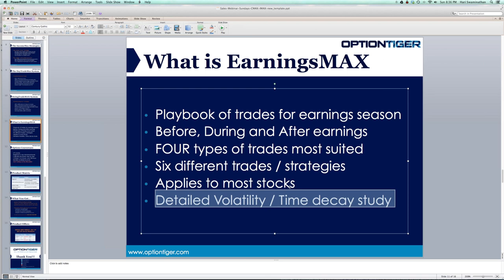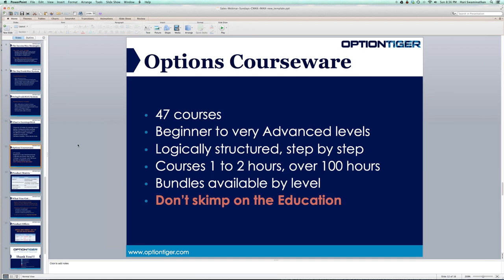With Earnings Max, you'll get about six different trading types with examples, and you can get access to all of that. OptionTiger also has its courseware — and from my experience running OptionTiger, I can't begin to tell you how many hundreds of emails I've received where people don't know what they're doing, take a trade, and lose hundreds or thousands of dollars because of simple mistakes. The learning part of options is not to be ignored.